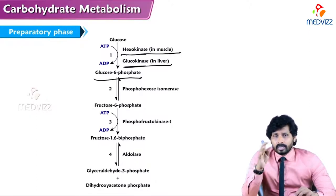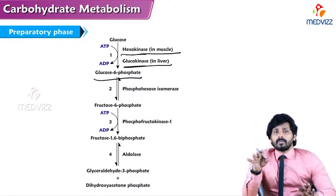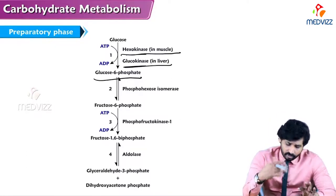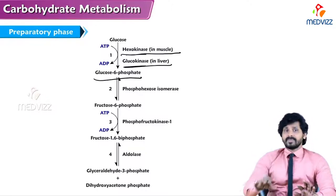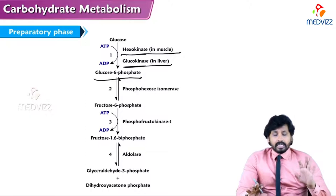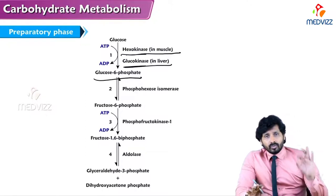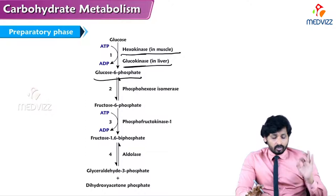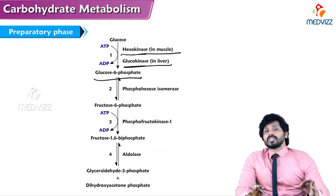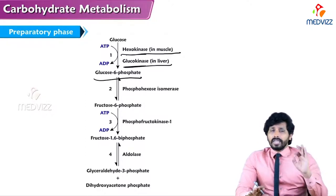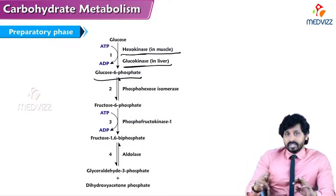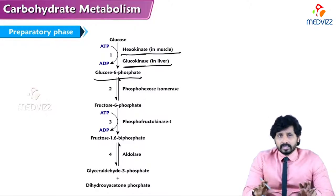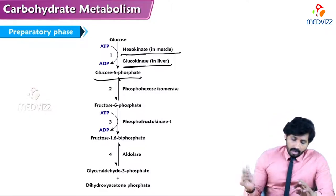Hexokinase is not specific to glucose — it phosphorylates any six-carbon compound, whether glucose, fructose, galactose, or mannose. Glucokinase is specific to glucose, present specifically in the liver, and works only at high glucose concentrations. Hexokinase works even at low glucose concentrations and is present in muscles and almost all cells.